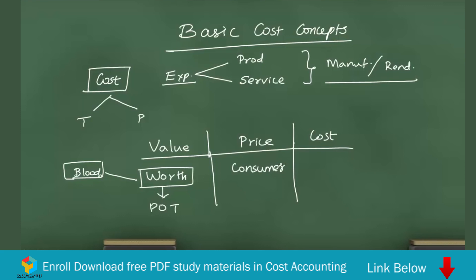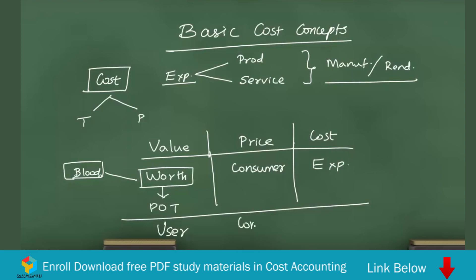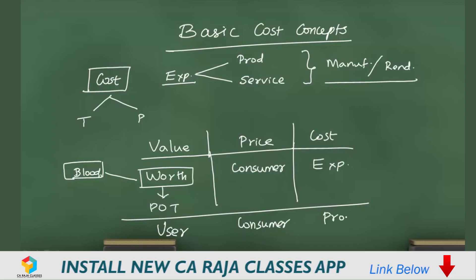Price is something which is paid by the consumer in exchange for a product or service — I take the product from the seller and in turn pay some money. Cost is different from both value and price. Cost is basically an expenditure incurred in producing a product or rendering a service. All three have different points of view: value is from the user's point of view, price is from the consumer's point of view, and cost is always from the point of view of the person who produces or renders the service.